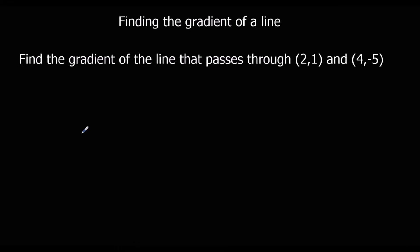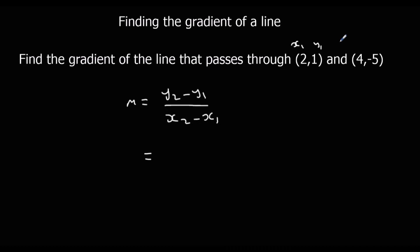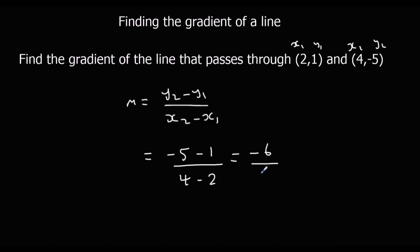We can use the same formula even when there are negative values. The gradient is y2 minus y1 over x2 minus x1 — the change in y over the change in x. So labelling x1, y1, x2, y2 and substituting in: minus 5 minus 1 over 4 minus 2 gives minus 6 over 2, and that's minus 3. The gradient is minus 3 in this case.